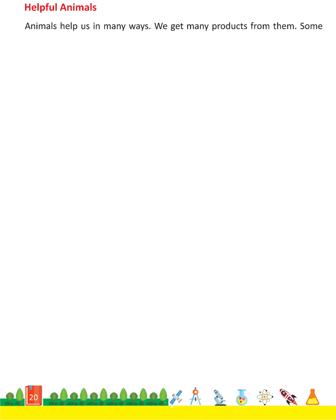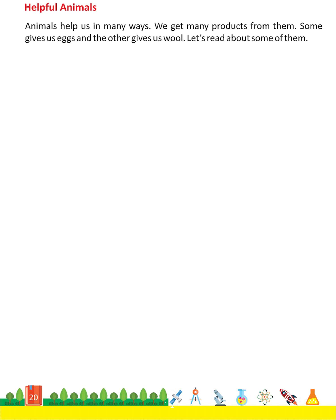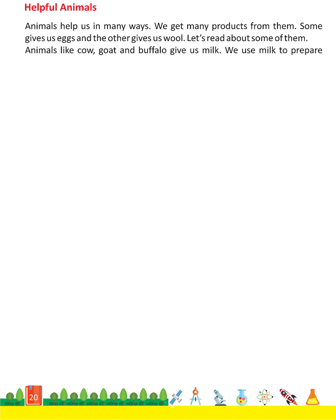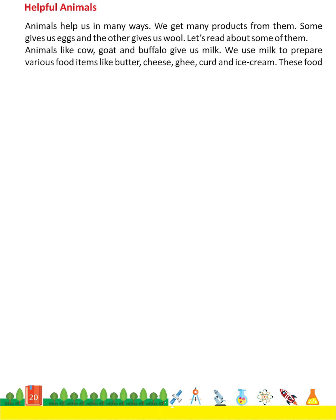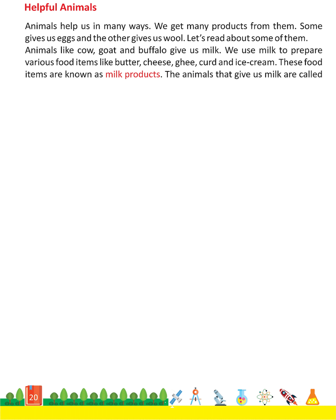Helpful animals. Animals help us in many ways. We get many products from them. Some give us eggs and others give us wool. Animals like cow, goat and buffalo give us milk. We use milk to prepare various food items like butter, cheese, ghee, curd and ice cream. These food items are known as milk products.